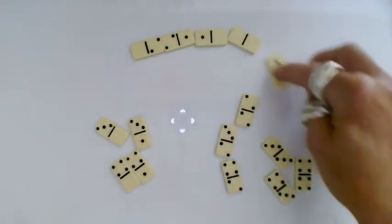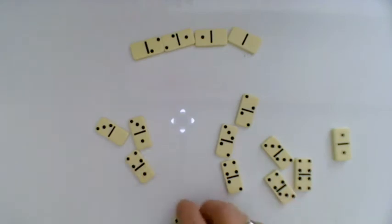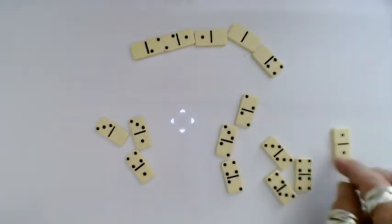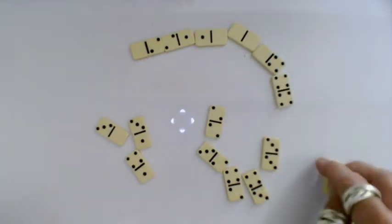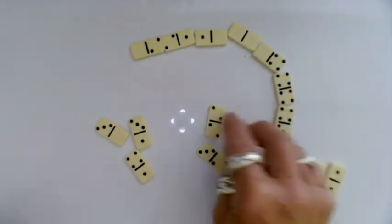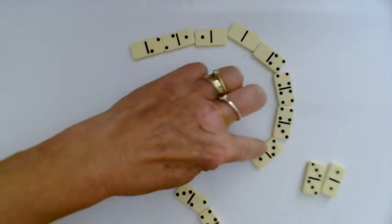Two blanks, put that there. I've got two blanks again. And there's a four blank. A double four might as well go there. Four three, three one.